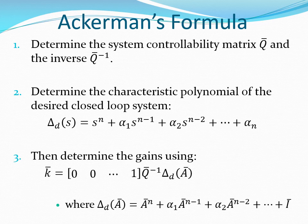The Ackermann's formula is of the structure shown on the slide. The first matrix is made up of zeros and then a one at the end. The second matrix is the inverse of the controllability test matrix. The third matrix is delta(A), obtained by placing the matrix A in place of S in the expression for the characteristic polynomial, so that delta(A) = A^n + alpha1*A^(n-1) + alpha2*A^(n-2) + ... + I, as shown on the slide.